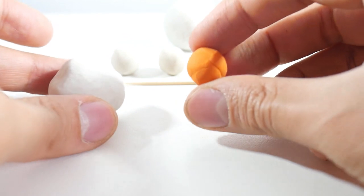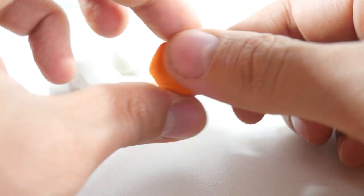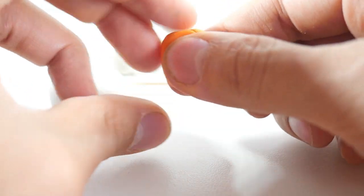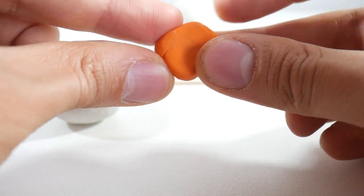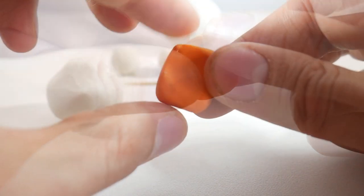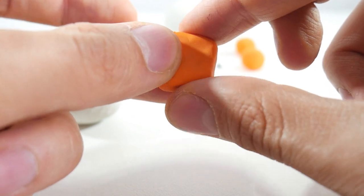Moving on to the beak. For this, take a ball of orange clay and mold it into a rectangle. Then, pinch one end slightly so that it resembles the shape on the screen.